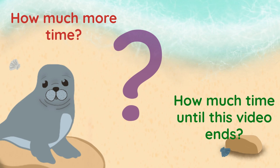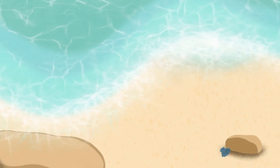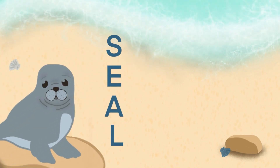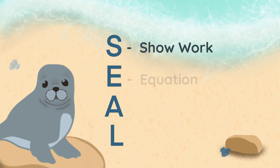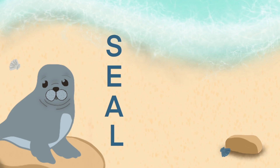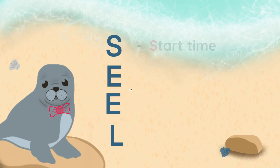Since I know for a fact you all love math, let's talk about a couple more important vocabulary words, or as I like to call them, SEAL. You might remember the acronym SEAL from solving word problems: S — show your work, E — write an equation, A — answer, L — label. Well, there is another type of SEAL, and it is an acronym used for elapsed time. This SEAL is spelled with two E's and stands for start time, end time, and elapsed time.